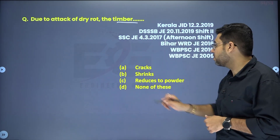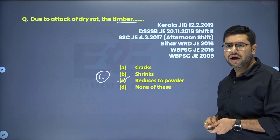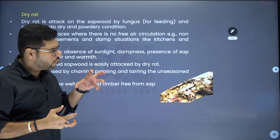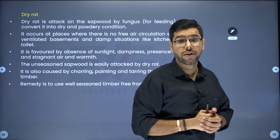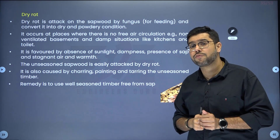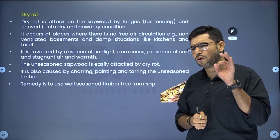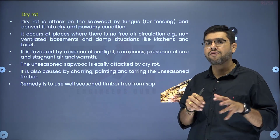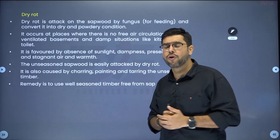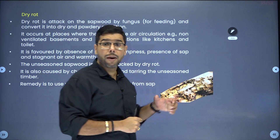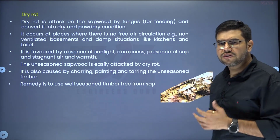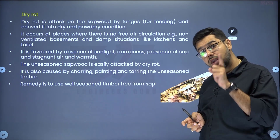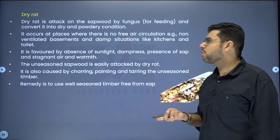Due to attack of dry rot, timber reduces to a powdery substance. Dry rot is a fungal attack — one type among different fungi attacks. Dry rot fungi eats the wood and converts it into powdery form. It generally occurs in timber placed in locations with lack of ventilation, such as toilets, basements, kitchens — wherever there is no proper ventilation and there is dampness. To prevent dry rot fungi, you must do proper seasoning of the wood, and then apply painting, varnishing, tarring, or charring after seasoning.